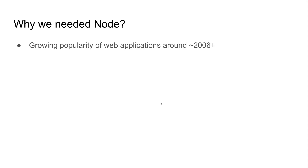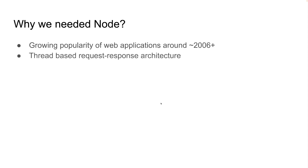So you can see the difference. Web applications and web-based solutions became very popular. And with this popularity, the old web servers like Apache — these were actually not handling the load well. Apache used a thread-based request-response architecture.